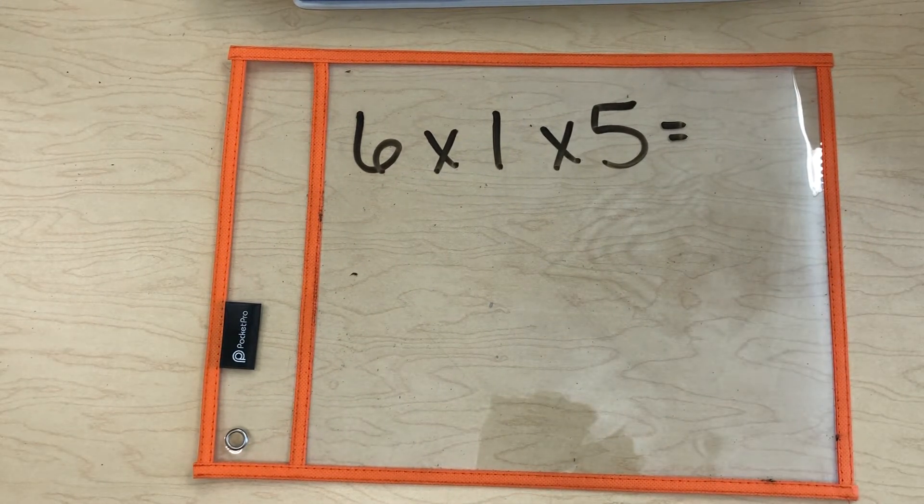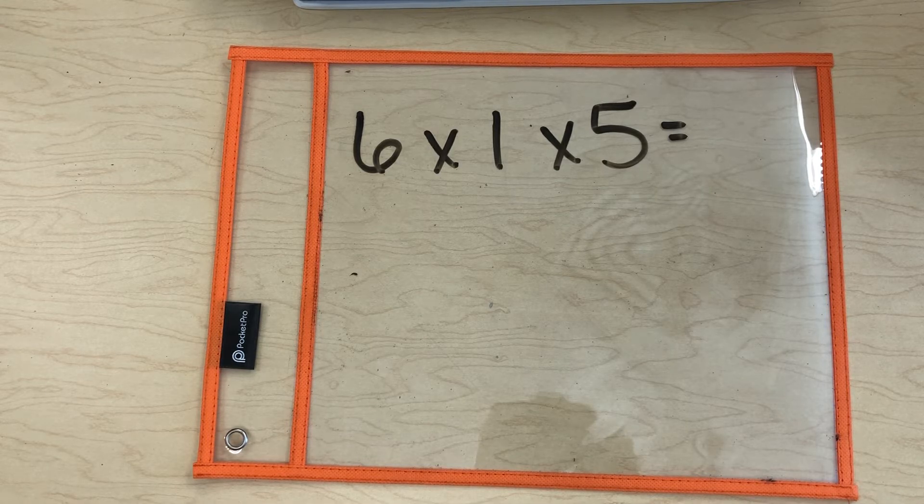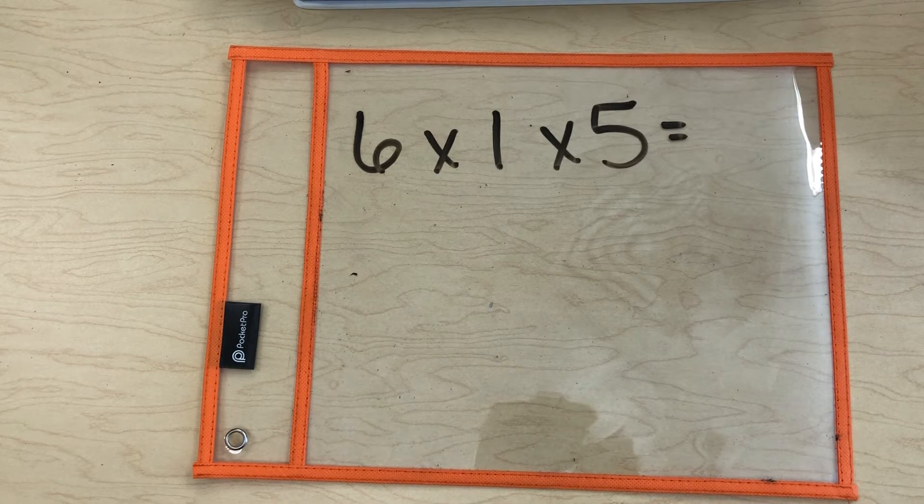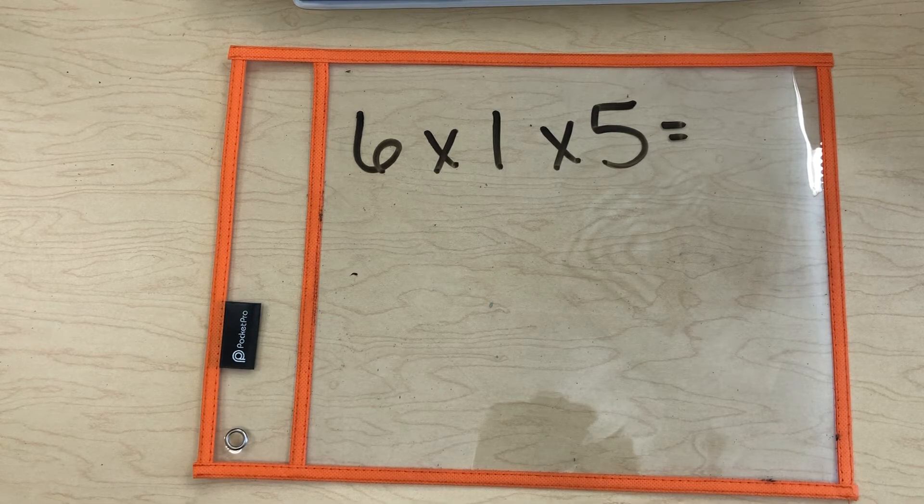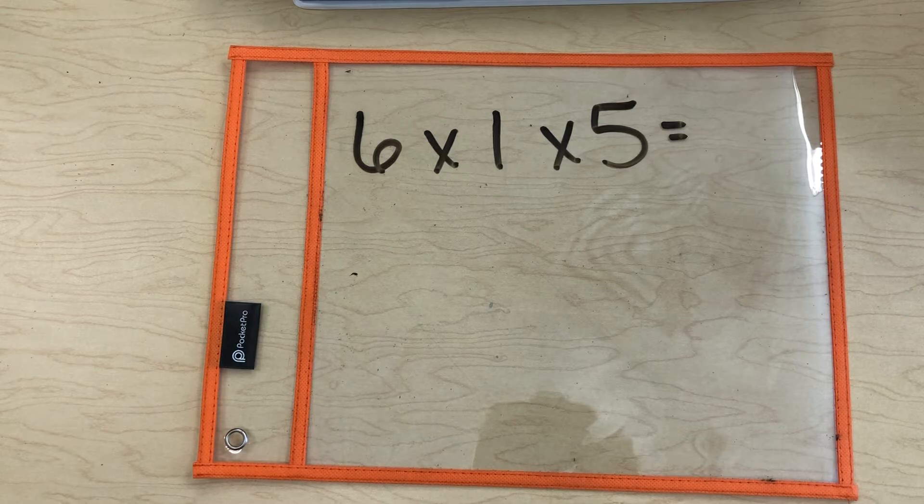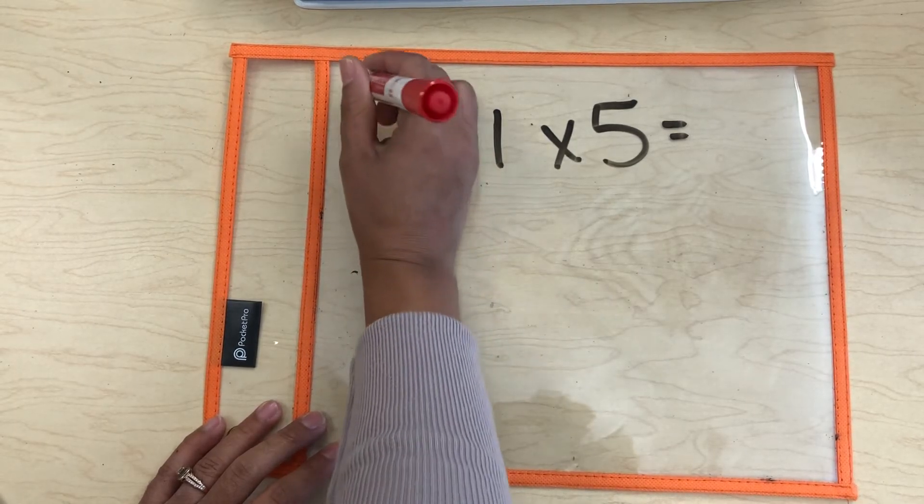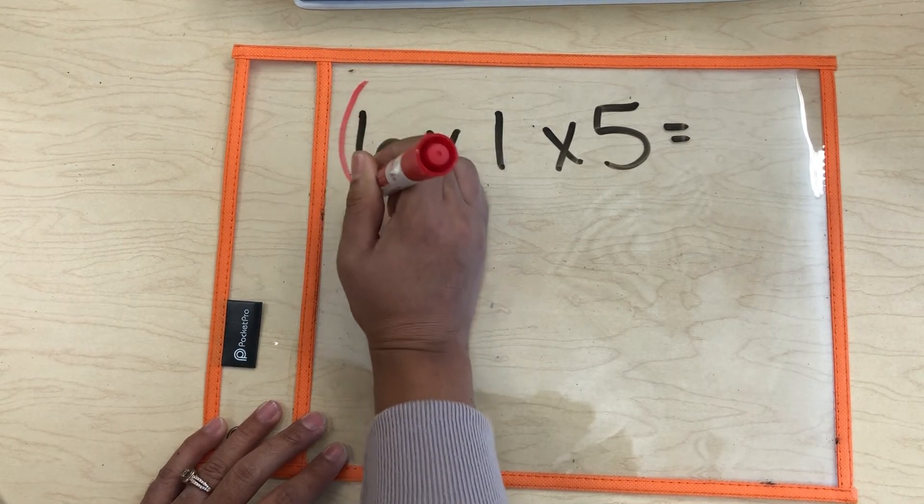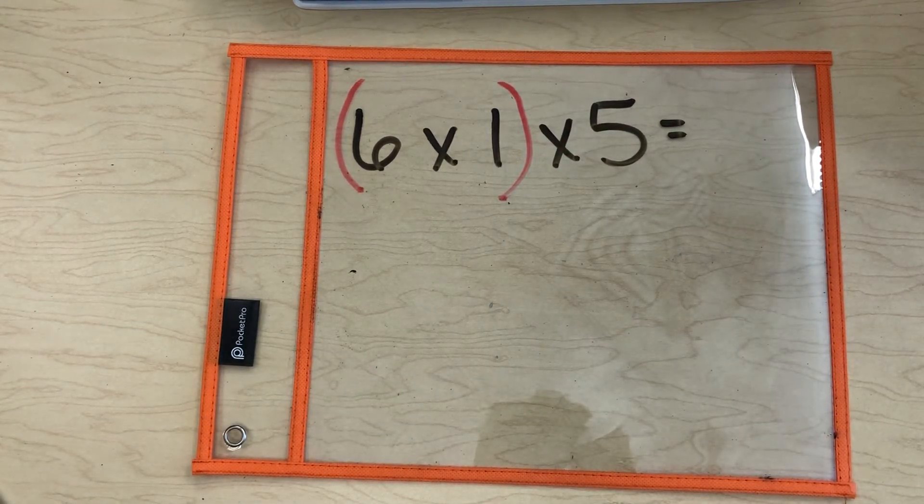Let's check out one more. This time, we're going to do 6 times 1 times 5. The first thing I want you to think of when you use the associative property is making sure that you have enough numbers to make two separate groups that are different. So here we go. It says 6 times 1 times 5. I always like to start off using my parentheses in the first set. So we're going to group 6 times 1 on the top.